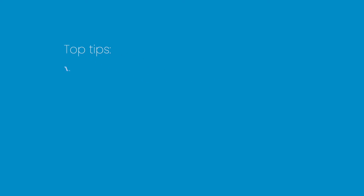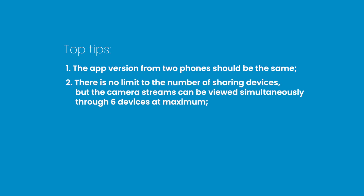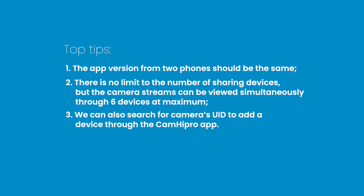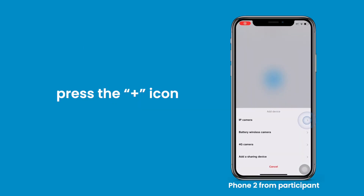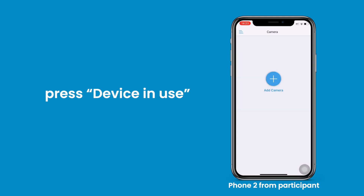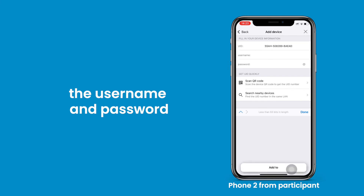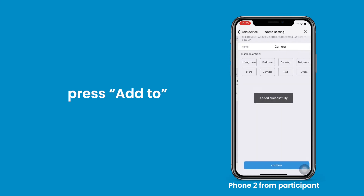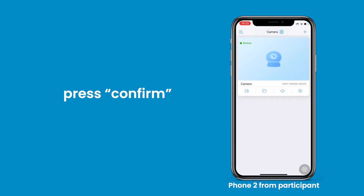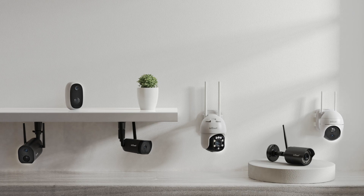Top tips: The app version on both phones should be the same, or you cannot share your device successfully. There is no limit to the number of sharing devices, but camera streams can be viewed simultaneously through six devices at maximum. You can also search for the camera's UID to add a device through the Cam High Pro app. Press the plus icon, press IP camera, press device in use, input the device UID, enter the username and password under the add device page, press add, then press confirm.